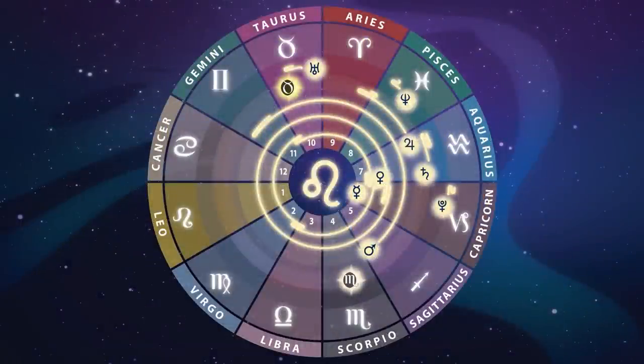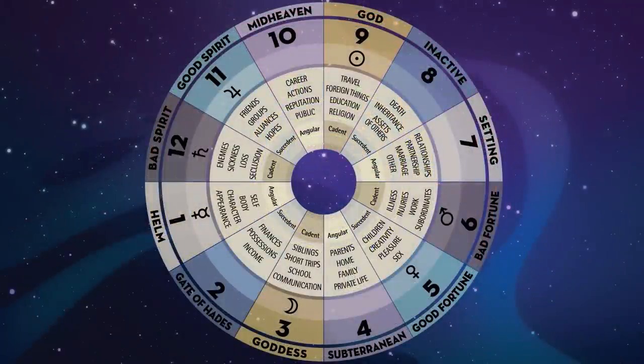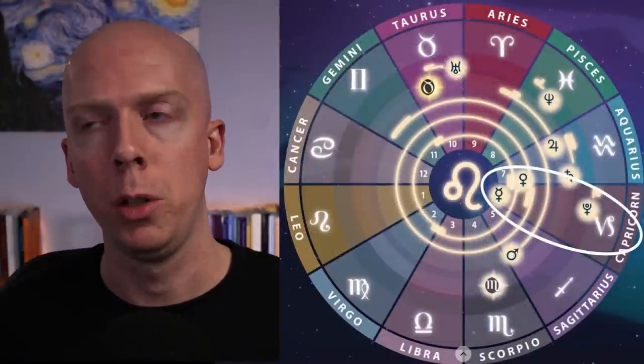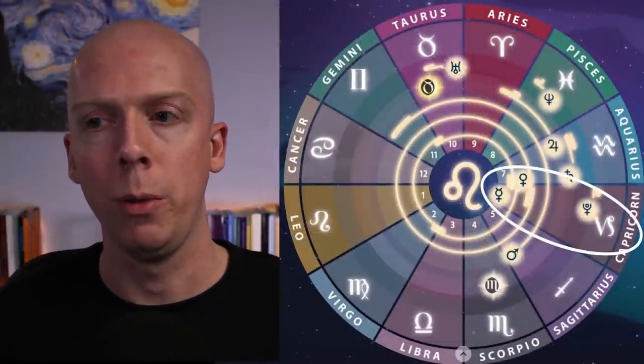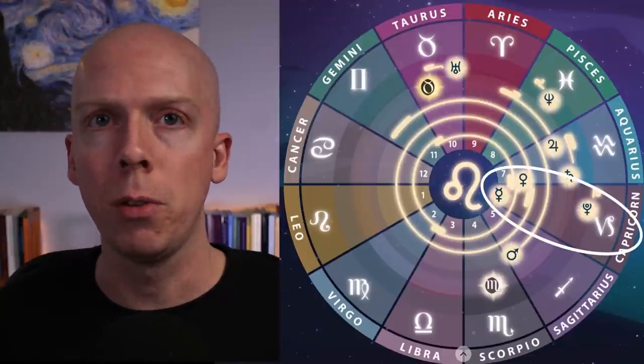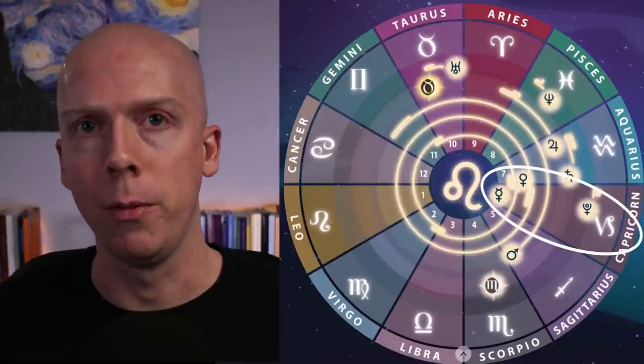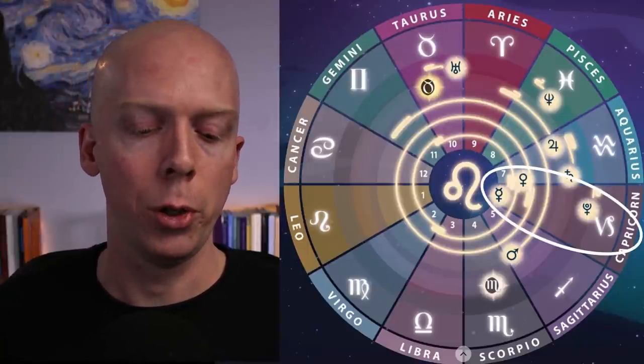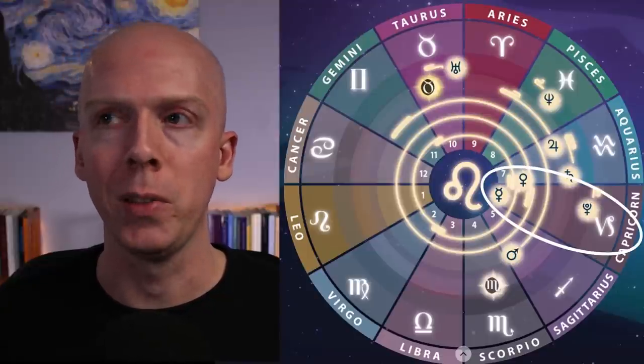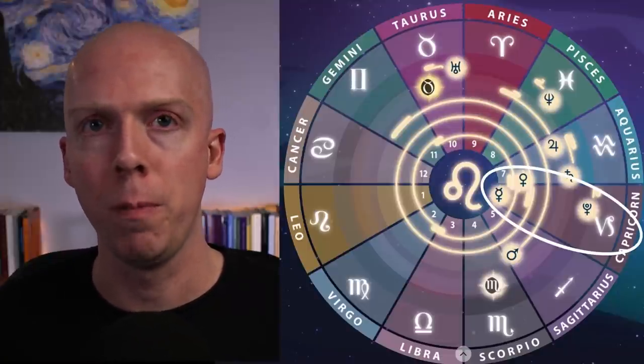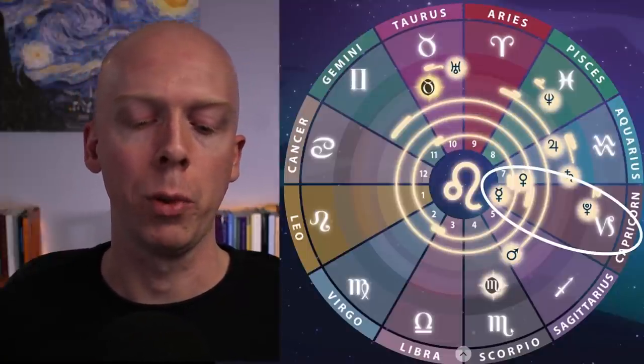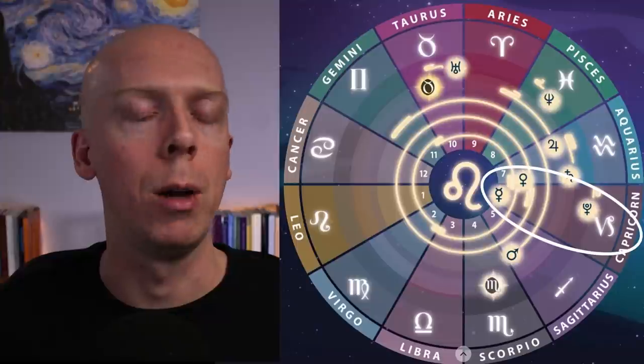Venus recently went retrograde and is about halfway through its retrograde cycle in your sixth house of work and health in the sign of Capricorn. Here's a diagram that shows the significations of the sixth house especially from a traditional standpoint. Work and health are the two primary themes that come up usually when we get sixth house transits. A Venus retrograde usually has us revisit and sometimes revise social relationships in the area of the chart that it's transiting.